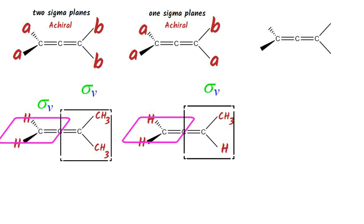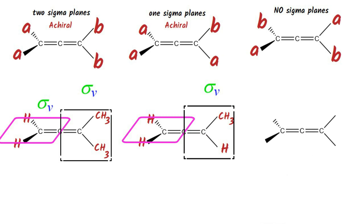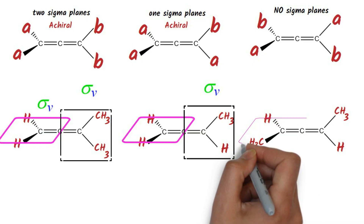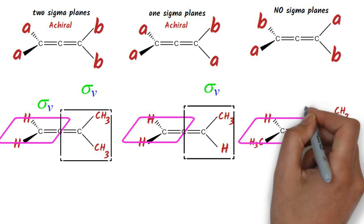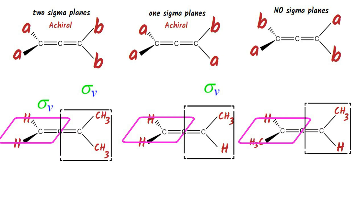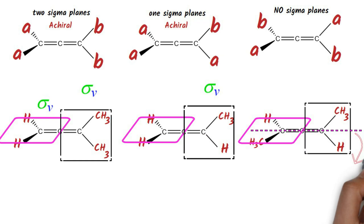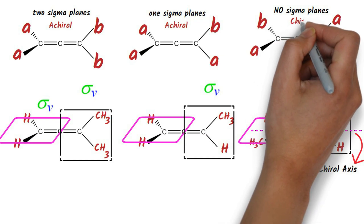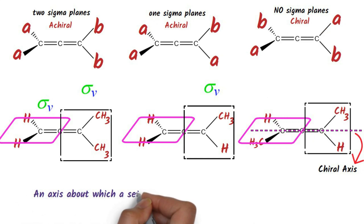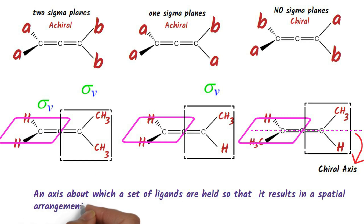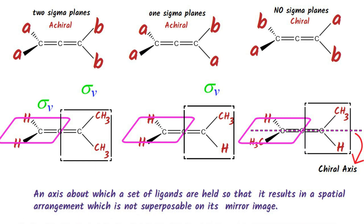Consider this fourth type of allene with different substituents on both end carbons. This allene doesn't possess any sigma plane. As an example, consider an allene with methyl and hydrogen on both end carbons. The horizontal plane is not a sigma plane for the vertical one and vice versa. However, this molecule has an axis passing through the double bonded carbons — this is called the chiral axis. This makes the allene chiral.